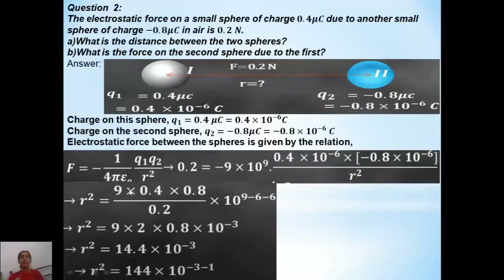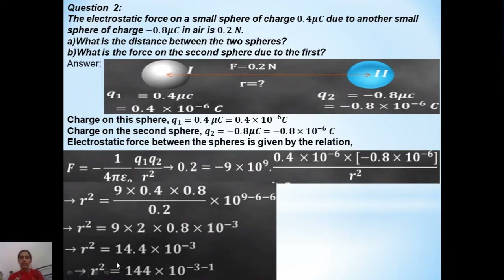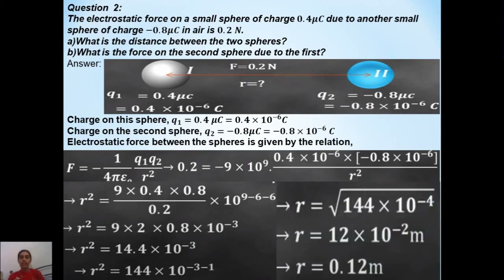Simplifying further: 9 into 0.4 divided by 0.2 gives 2 into 0.8, and 0.4 divided by 0.2 gives 2. So we get 9 into 2 into 0.8, and powers: 10 to the power of 9 minus 6 minus 6, which gives 10 to the power of minus 3. Multiplying gives 14.4 into 10 to the power of minus 3.